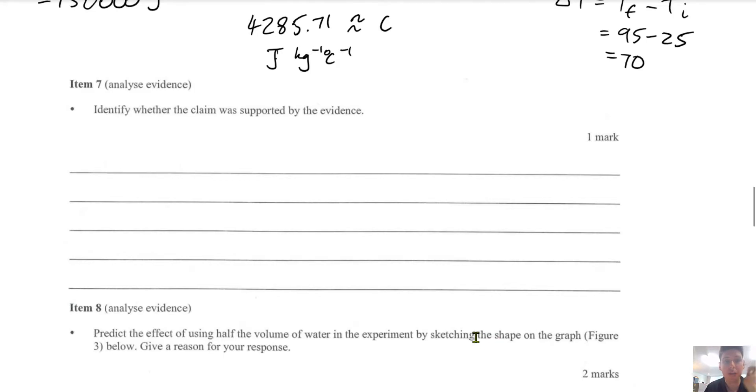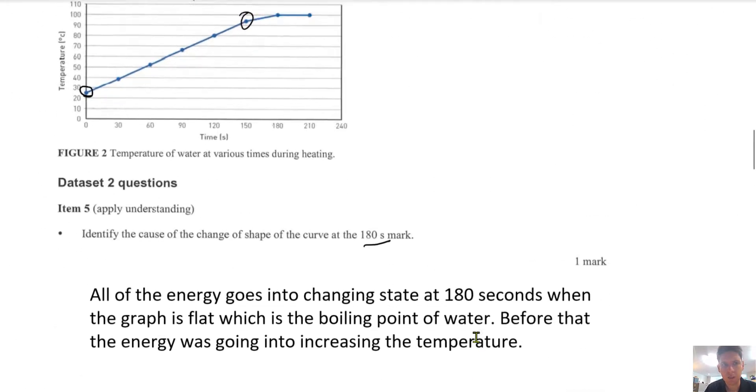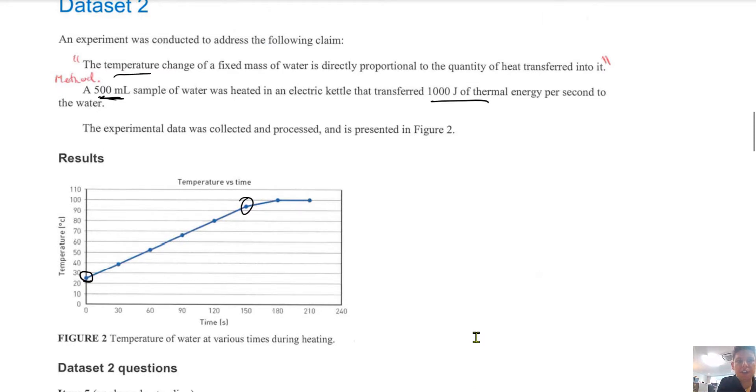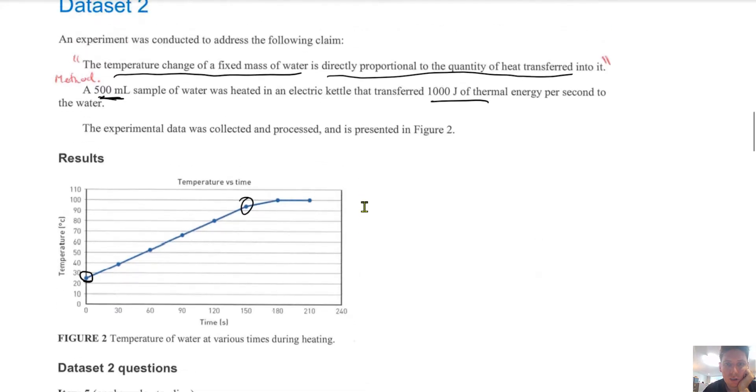Next, identify whether the claim was supported by the evidence. So the claim is temperature change of fixed mass of water is directly proportional to the quantity of heat. So as the temperature increased, the quantity of heat inside the water also increased. So temperature is proportional to Q, heat.